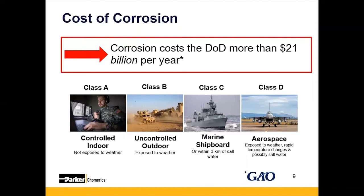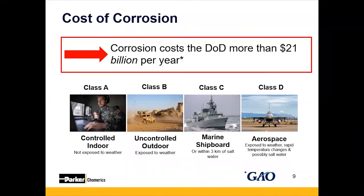Now talking about some of the costs of corrosion: according to the Government Accountability Office, corrosion costs the Department of Defense more than $21 billion a year, much of it in the form of rework or increased maintenance schedules, mostly caused by harsher environments. There are four different types of environments. Class A is typically a controlled indoor environment, often seen in life science or indoor telecom applications — not really exposed to weather, so you don't see much galvanic corrosion.